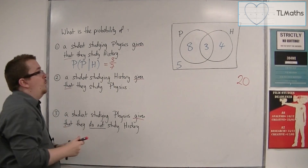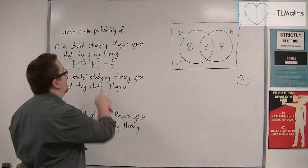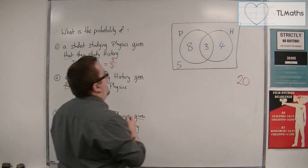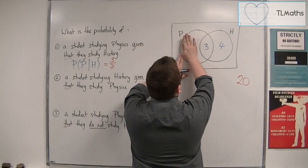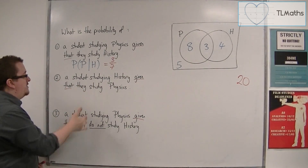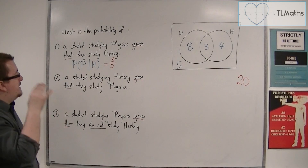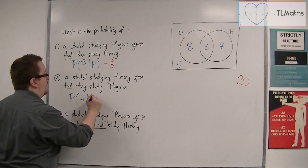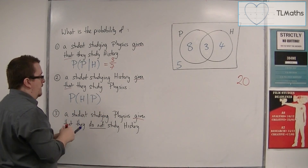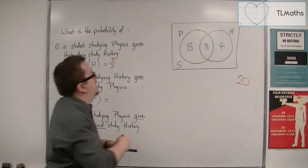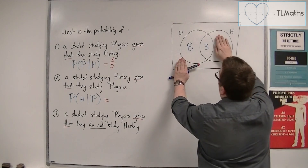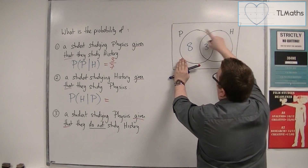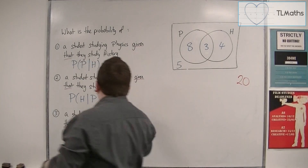What you want to do is cover up what isn't the 'given that' part and just look at that. So if it's the H, just look at H. In this second example, a student studying history given that they study physics is written as P(H|P). We just look at P this time, and the probability of studying history is 3 out of 11.